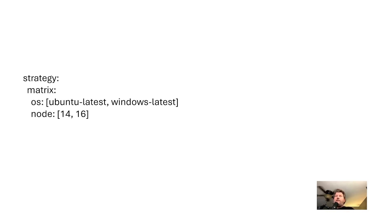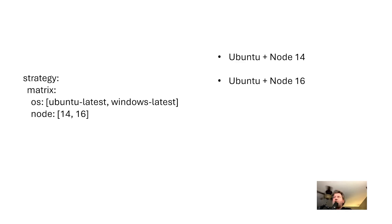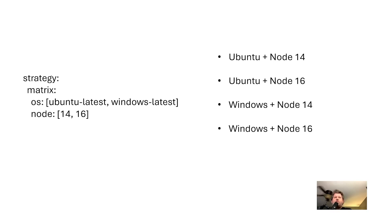For example, with this particular matrix YAML snippet, this would split into four different jobs: one with Ubuntu and Node 14, one with Ubuntu and Node 16, one with Windows and Node 14, and one with Windows and Node 16.